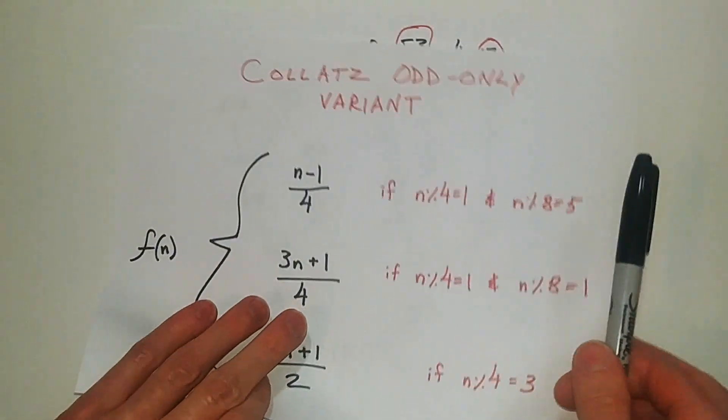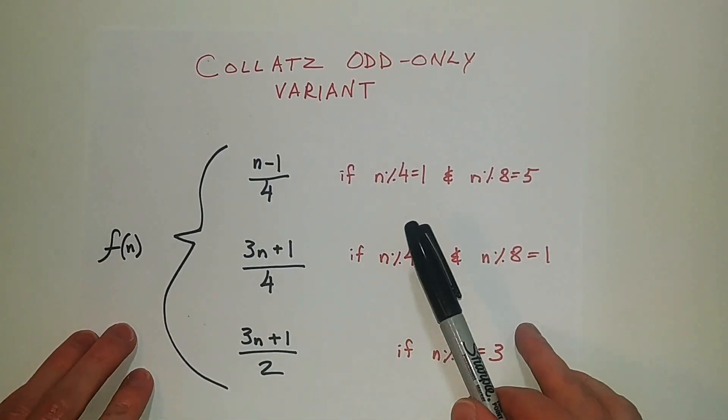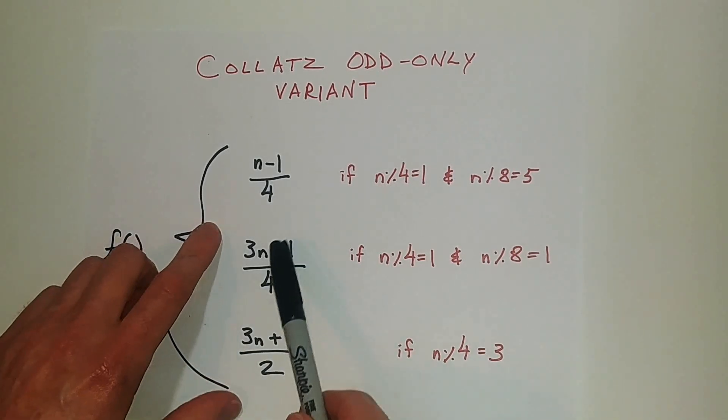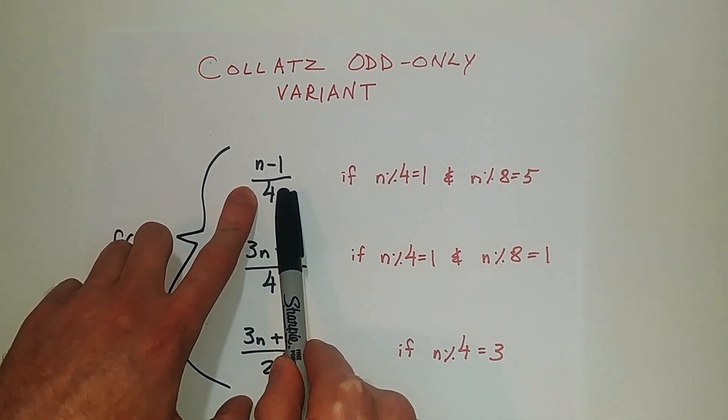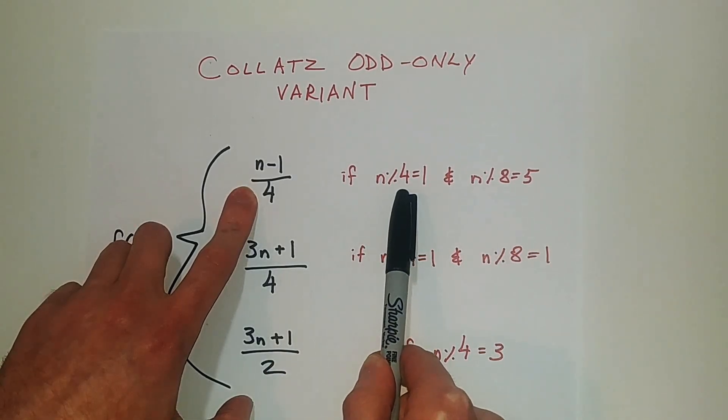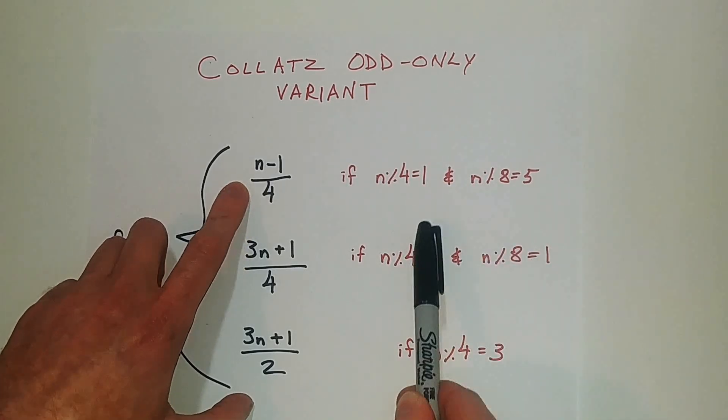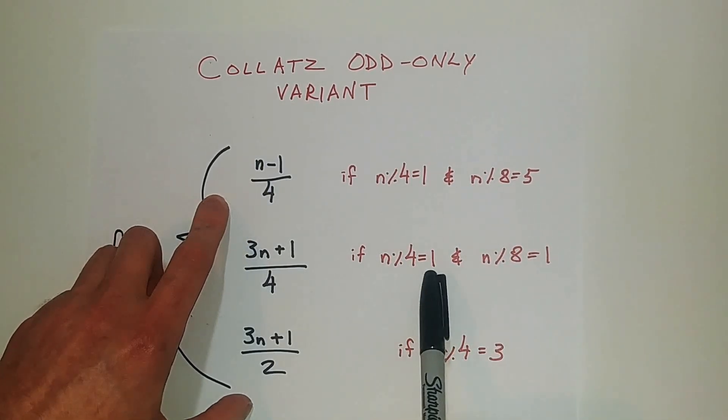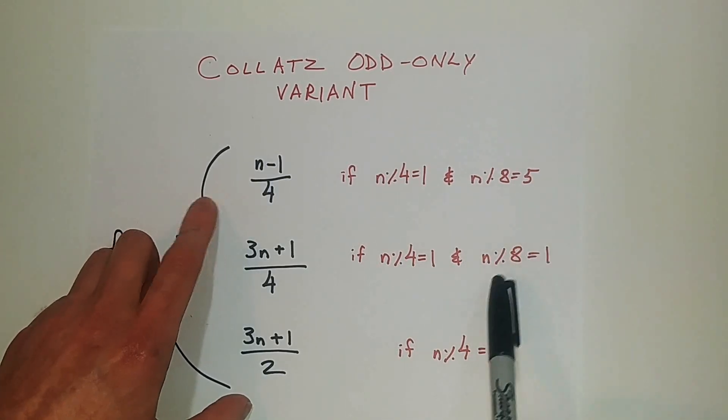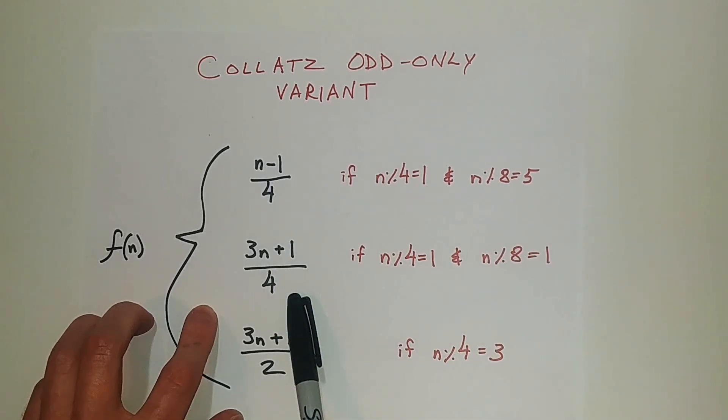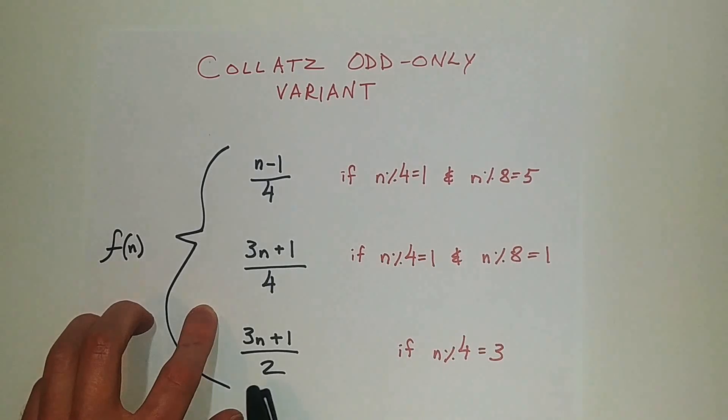So the function for our Collatz variant would be this. And I didn't really explain these, but just do the math yourself. So n minus 1 divided by 4, if n modulus 4 is equal to 1, and the modulus of 8 is equal to 5, basically we're splitting the numbers, the odd numbers that are modulo 4 into two groups. One with modulo 8 equals 1, one with modulo 8 equals 5. 3n plus 1 divided by 4, and then 3n plus 1 divided by 2, if n modulo 4 is 3.